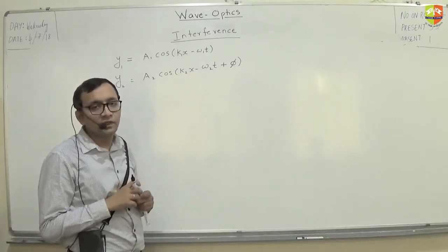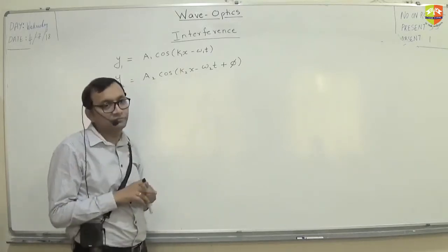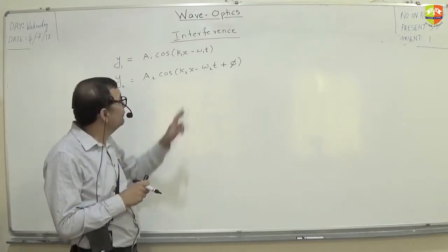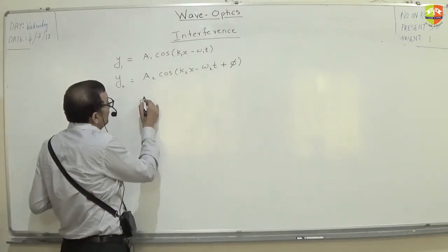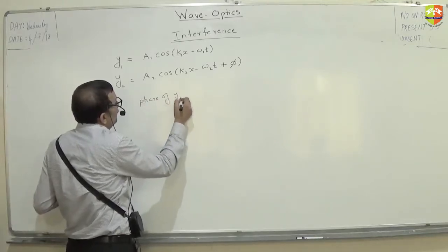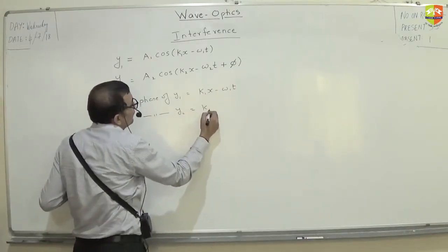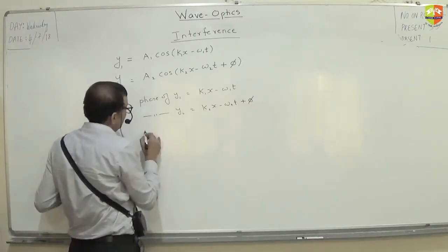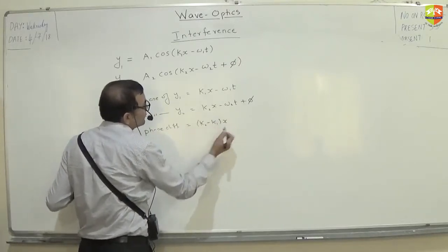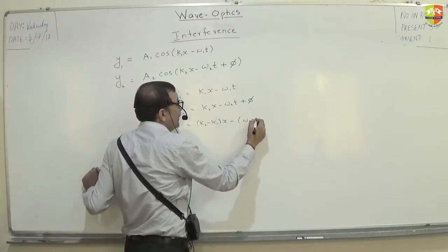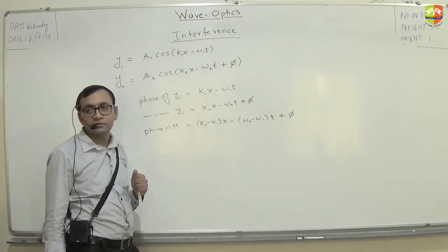And let us say the second wave is y2 = A2 cos(K2x minus omega2·t plus phi). What is the phase of the first wave? The phase of y1 is K1x minus omega1·t. Phase of y2 is K2x minus omega2·t plus phi. So the phase difference becomes: (K2 minus K1)·x minus (omega2 minus omega1)·t plus phi.